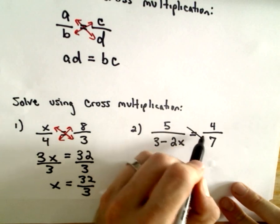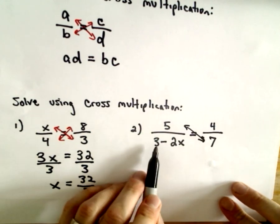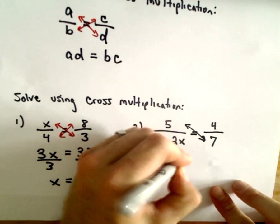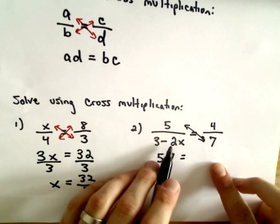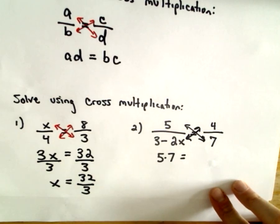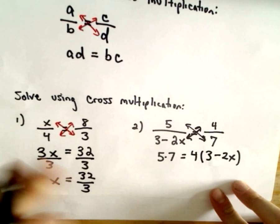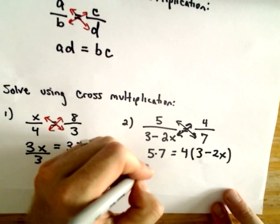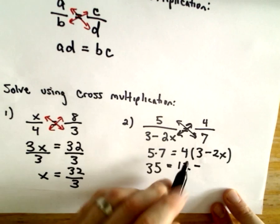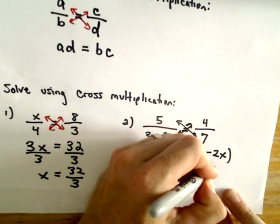Same thing if we multiply 5 times 7. On our next equation, we have 5 divided by 3 minus 2x equals 4 over 7. So 5 times 7. We have to be careful because we have to distribute when we multiply the 3 minus 2x by the 4. So I'm going to write 4, and then in parentheses, 3 minus 2x. So we've got 35. If we distribute, 4 times 3 will be 12. 4 times negative 2x, that's going to be negative 8x.